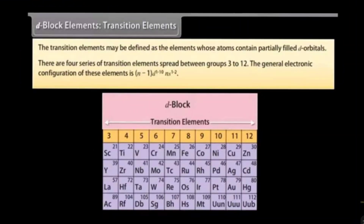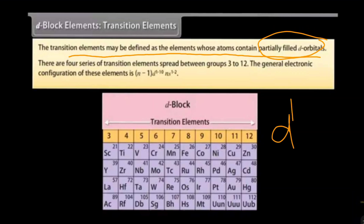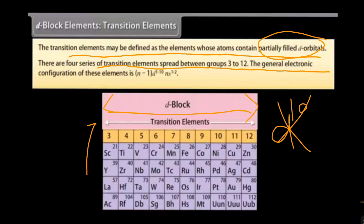The elements of the d block of the periodic table are known as transition elements. Transition elements may be defined as the elements whose atoms contain partially filled d orbitals. Partially filled d orbitals means the configuration other than d10 — so d1, d2, d3 — the configuration should not be d10. Only then you can say the atom contains partially filled d orbitals. There are four series of transition elements spread between group 3 to 12. The elements which have completely filled d orbitals are named as pseudo transition elements.